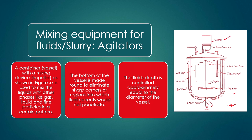To get intense mixing in a certain flow pattern, baffles are attached as a mechanical provision. A jacket is provided for isothermal mixing at constant temperature or pressure. There will be a dip leg through which liquid or slurry is inserted into the vessel, a shaft on which the impeller is mounted and rotated at a certain speed by a motor, a drain valve through which the contents are drained after mixing, and a liquid surface maintained at a certain level inside the vessel.